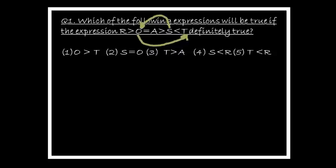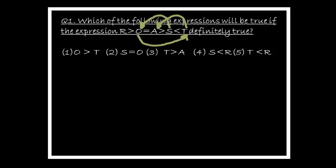Option two: s equal to o — draw a reverse arrow from s to o. Symbols: equal to and greater than; reverse the higher priority, so s is less than o. Option two is wrong. Option three: t greater than a — symbols between t and a: less than and greater than — equal priority conflict, cannot determine relation, option three is wrong. Option four: draw from s to r — symbols: greater than and equal to, reverse direction gives s less than r. Option four is the right answer.